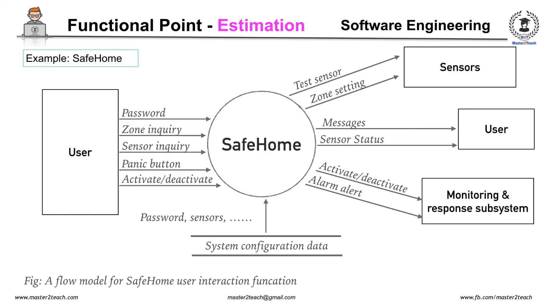Three external inputs: password, panic button, and activate or deactivate. Two external inquiries: zone inquiry and sensor inquiry. One ILF: system configuration file. Two external outputs: messages and sensor status. Four EIF: test sensor, zone setting, activate/deactivate, and alarm alert.